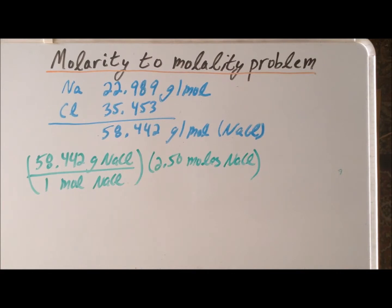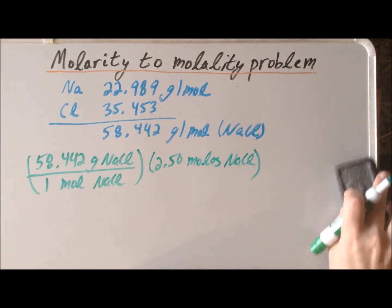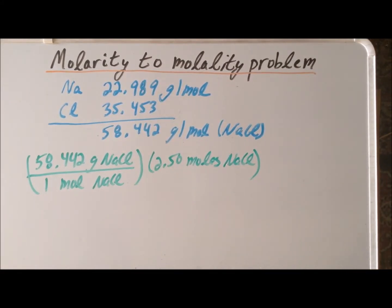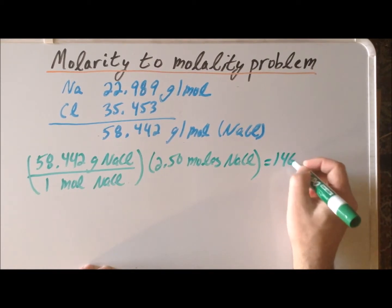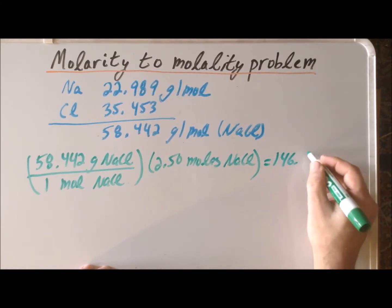So by multiplication, we can figure the total mass of sodium chloride in the solution, which works out to be 146.12 grams.